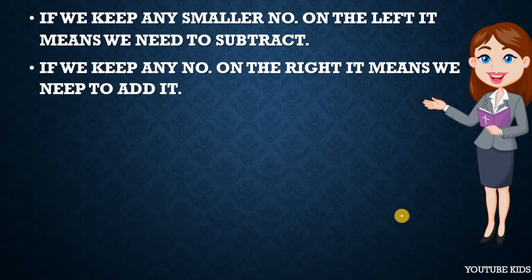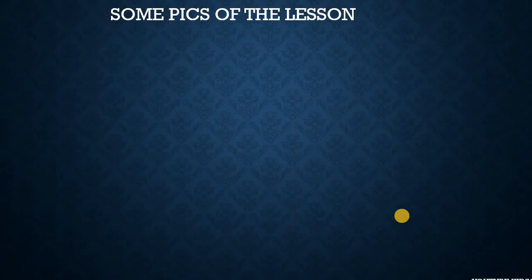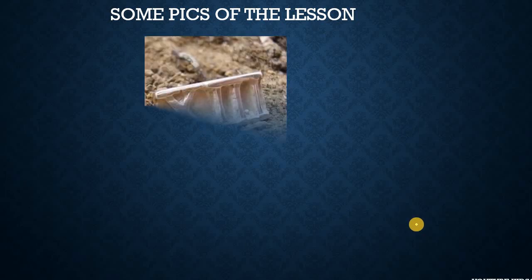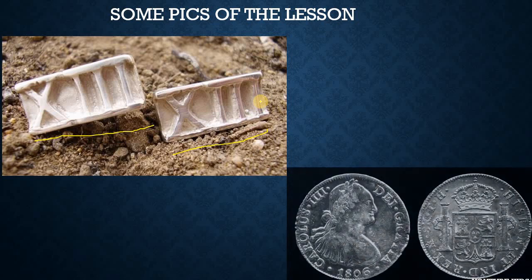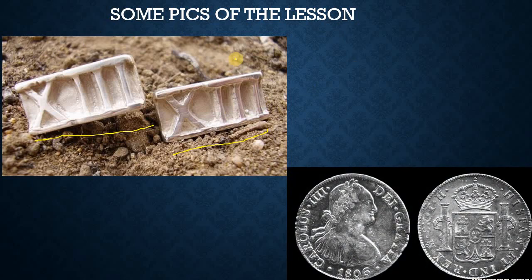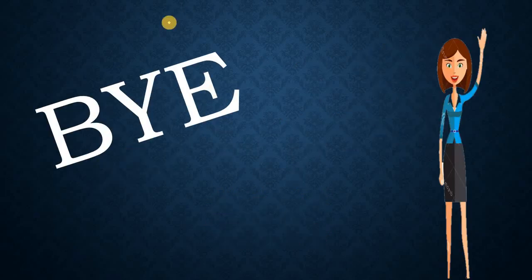This is the end of our video. Let's see some pics from the lesson. These are bone-like structures having Roman numerals. Can you guess what number they have? Yes, it's 13! And these are coins of the Romans. Thanks for watching. Bye!